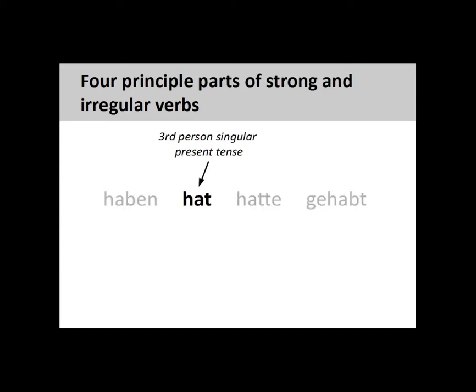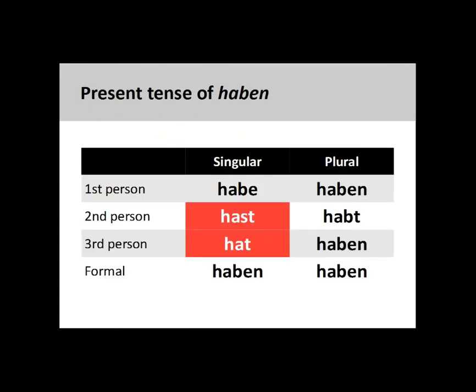As this presentation focuses on the present tense conjugation of strong and irregular verbs, we will only be dealing with the second principal part, the third person singular present tense verb form. We will look at the other principal parts in future presentations. The second principal part is important as it lets us know that the verb we are conjugating has unpredictable variations in the second and third person singular. This is a typical characteristic of most irregular and strong verbs.